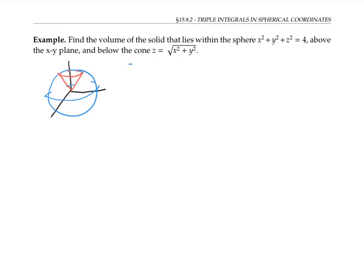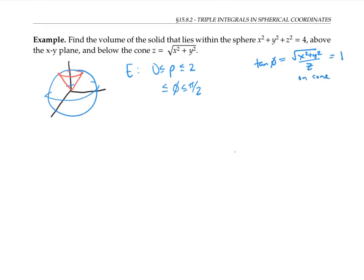First, let's describe this region E in terms of spherical coordinates. We know that rho, the radius, is going to be between zero and two. Because we're lying below the cone and above the xy plane, phi is bounded by the angle of the cone and pi over two. From the previous video on spherical coordinates, tangent of phi equals the square root of x squared plus y squared over z. For points on the cone where z equals the square root of x squared plus y squared, tangent phi equals one, so phi equals pi over four. That's our lower bound for phi. Finally, theta can be anything, so we put it between zero and two pi.